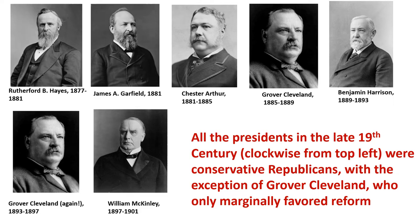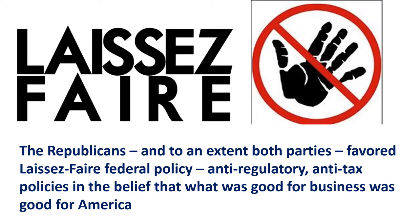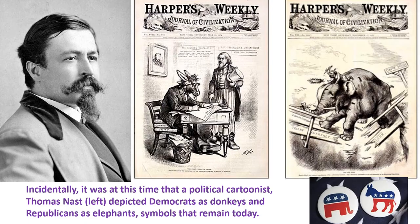All the presidents in the late 19th century were conservative Republicans — the lone exception being Grover Cleveland, who only marginally favored reform. With the economy booming, both parties — but especially the Republicans — favored a laissez-faire federal policy: hands-off, anti-regulatory. They believed that what was good for business was good for America. Political cartoonist Thomas Nast depicted Democrats as donkeys and Republicans as elephants, which are the symbols that remain today.